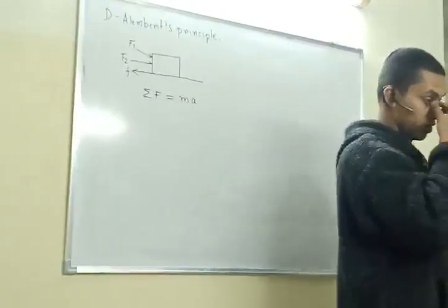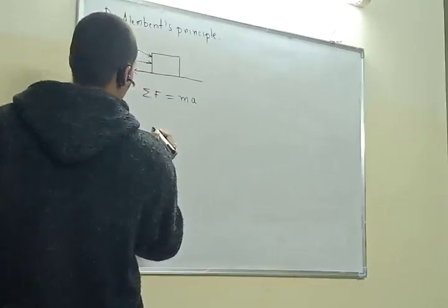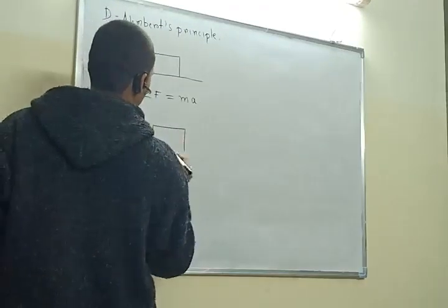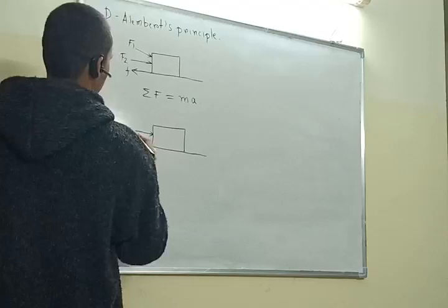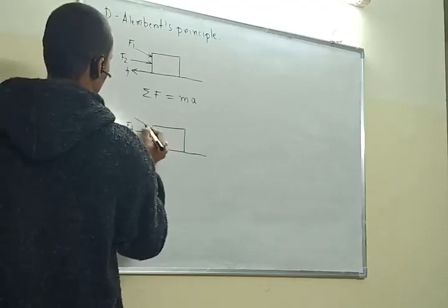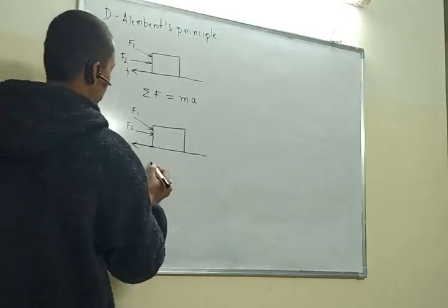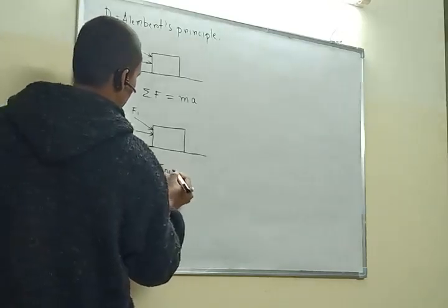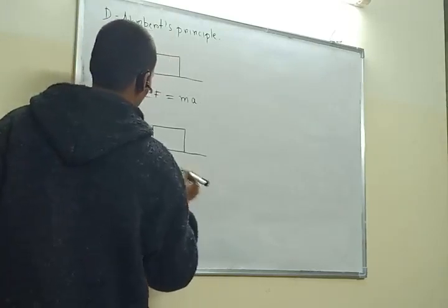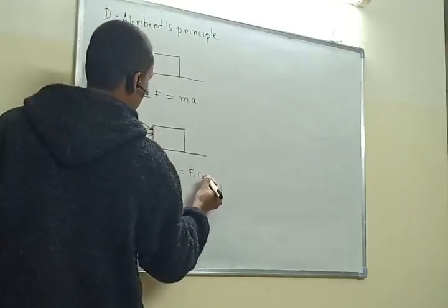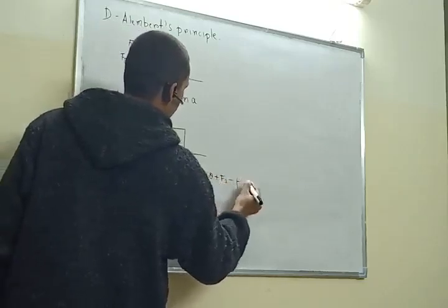But what D'Alembert said is — there is a body, more or less the same as Newton's law. Forces are acting like F1, F2, and F. The net force F_net is equal to F1 cos θ plus F2 minus F, that is mu times Rn (frictional resistance). If we do this, there will be some mass times acceleration.